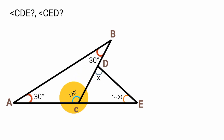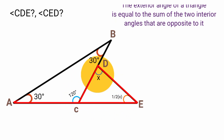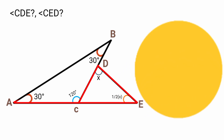We can use this 120-degree angle to solve for the unknown angles. This angle is an exterior angle of the inner triangle, and by the exterior angle theorem, an exterior angle equals the sum of the two non-adjacent interior angles. Therefore, this exterior angle equals angle CDE plus angle CED, which is x plus one-half x. So we form the equation: x plus one-half x equals 120 degrees.